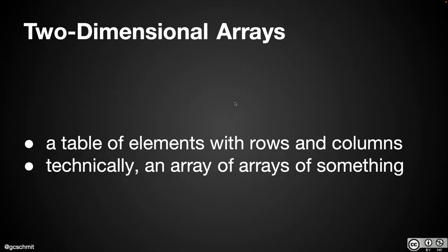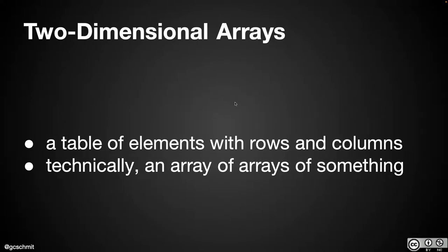Two-dimensional arrays. Here's the simplified mental model: picture a two-dimensional array as a Google Sheet. There's a certain number of rows, a certain number of columns, and each cell in the Google Sheet has a value. Most of the time, that mental model works really well.